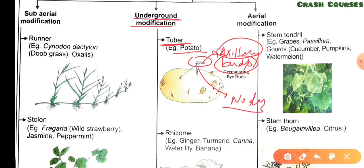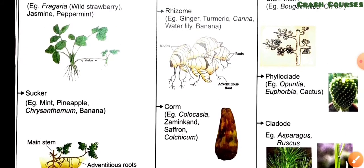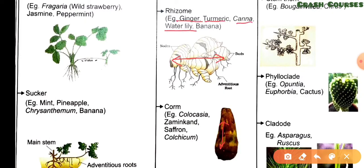An example of tuber is potato. The next type is rhizome. Rhizome also develops underground and it grows horizontally — this is the big difference between corm and rhizome: rhizome grows horizontally while corm grows vertically. Examples of rhizomes are ginger, turmeric, canna, water lily, and banana.